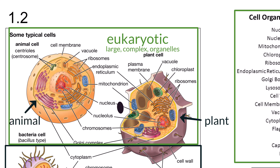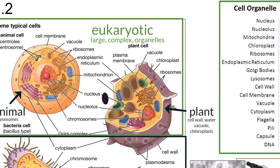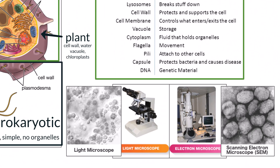Plant cells have a cell wall, a large water vacuole, and chloroplasts for photosynthesis, while animal cells lack those components and have lysosomes for digestion. We can study and observe these features of cells by using microscopes.